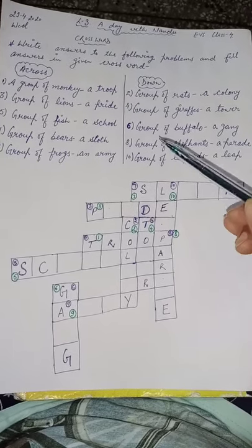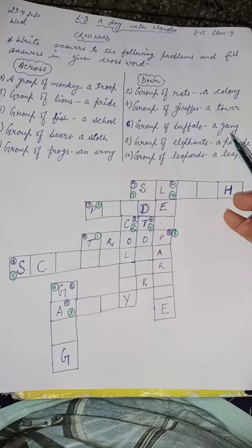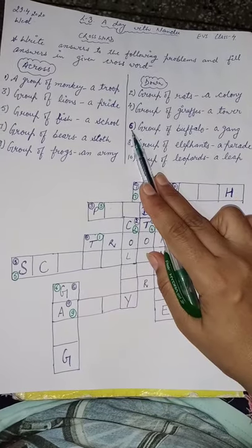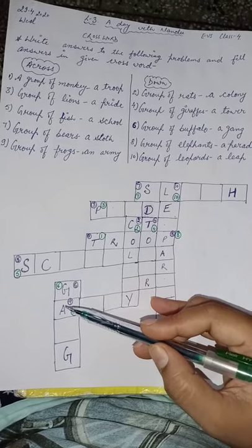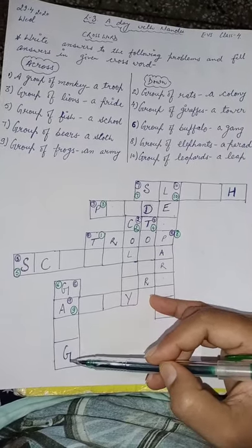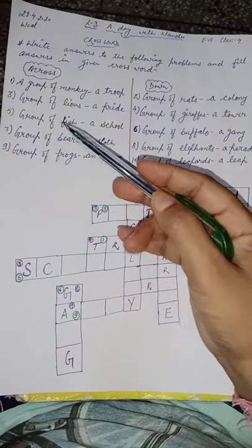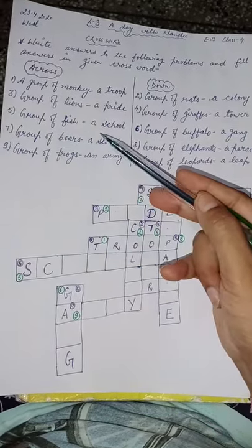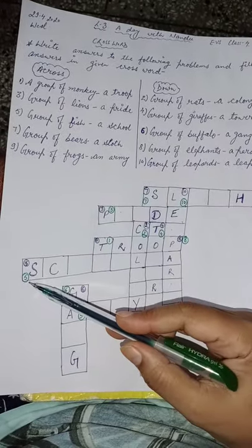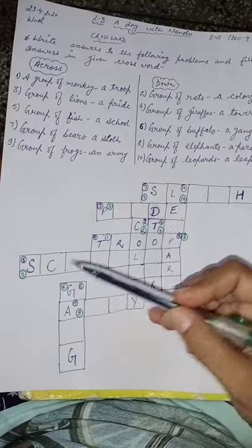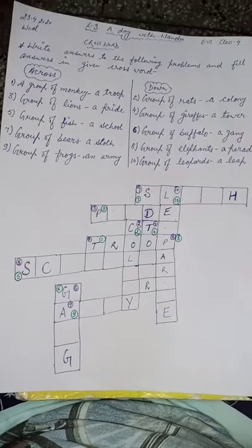Let's take one more example. The group of buffaloes is called a gang. This is on number 6, going down. Where is number 6? G-A-N-G — N you have to write yourself. The group of fish is called a school, and it is on number 5. S-C-H-O-O-L — I have written some letters; the rest of the alphabets you have to fill on your own.